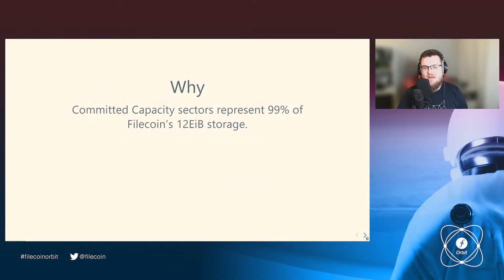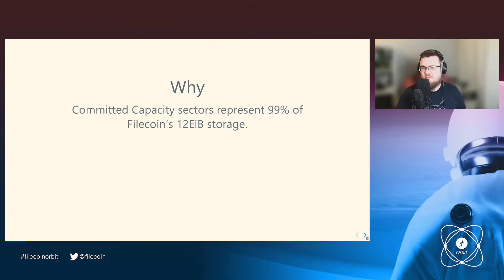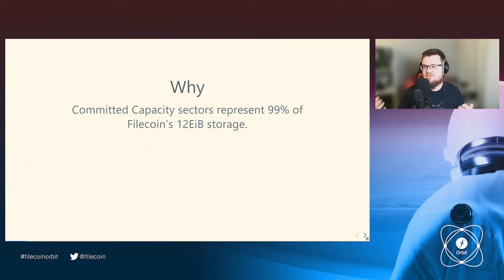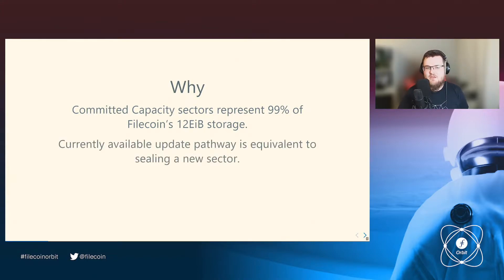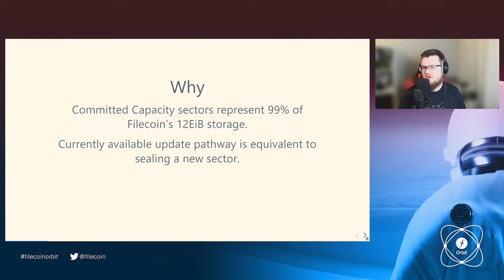Why are we even introducing this thing? Committee capacity sectors currently represent 99% of Filecoin's 12 exabytes of storage. Committee capacity sectors are not storing any data — they are just miners signaling that they are committing to storing some data in the future. Currently, the available pathway of updating capacity sectors to sectors storing data is equivalent to creating new sectors, so many miners choose to instead seal a new sector. This is the primary drawback of the current update system and we are trying to improve it.